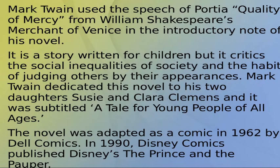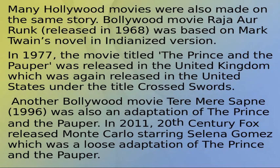It is a story written for children, but it critiques the social inequalities of society and the habit of judging others by their appearances. Mark Twain dedicated this novel to his two daughters, Susie and Clara Clemens, and it was subtitled 'A Tale for Young People of All Ages.' The novel was adapted as a comic in 1962 by Dal Comics, and in 1990 Disney Comics published Disney's The Prince and the Pauper. Many Hollywood movies were also made on the same story. The Bollywood movie Raja Aur Rang, released in 1968, was based on Mark Twain's novel in an Indianized version.